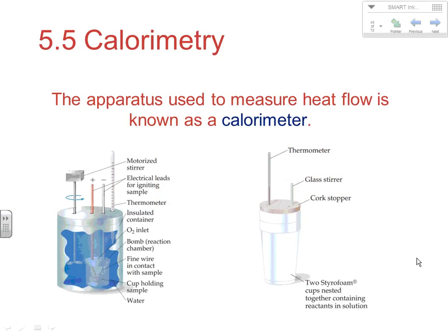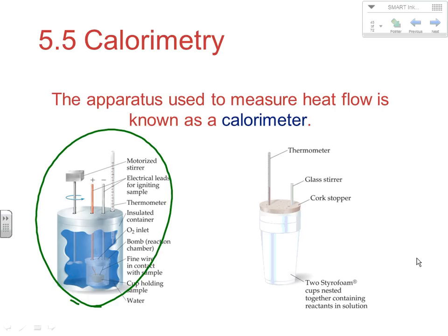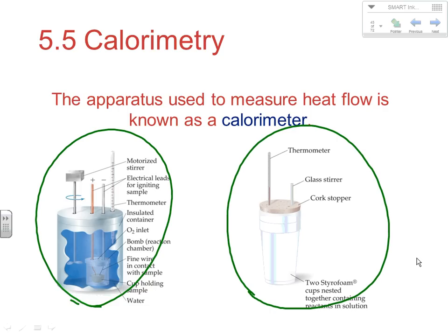There are different apparatus we can use to measure heat flow. For measuring heat flows in different reactions, we use what's known as a calorimeter. You can have really high-tech calorimeters like a bomb calorimeter — we won't do calculations with that, but in a higher-level college course you would get into bomb calorimetry. What we deal with is a typical, simple coffee cup calorimeter. The lab we'll be doing this chapter will use coffee cup calorimetry.